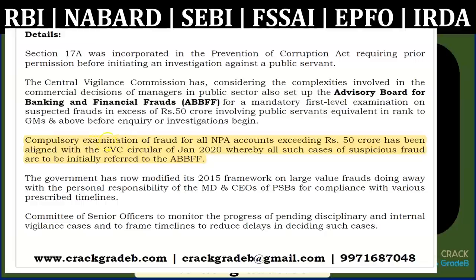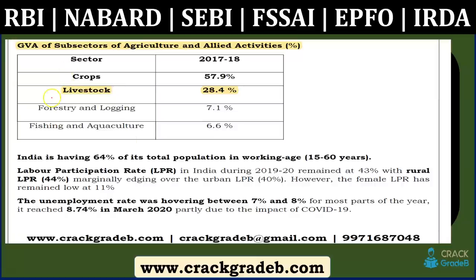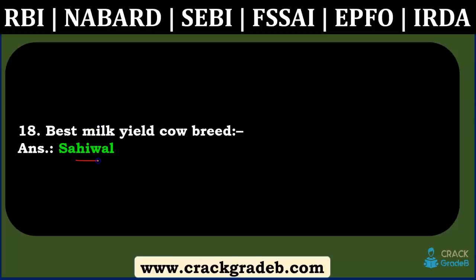For NPA accounts to be checked, the threshold is ₹50 crore or more. This was in January current affairs — all NPA accounts exceeding ₹50 crore have been aligned with the CVC circular, and such cases of suspicious fraud are initially referred to the ABB (Advisory Board on Banking and Financial Fraud). Regarding livestock contribution to Agriculture GVA, the exact year and options are unclear, but NABARD Annual Report clearly mentions GVA contribution by crops, livestock, forest, and fishing/aquaculture.